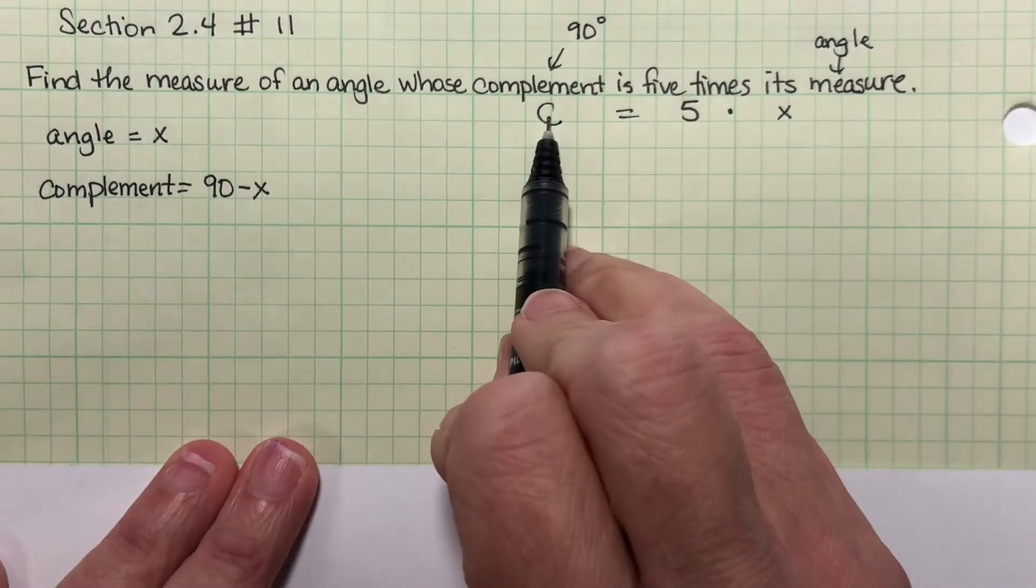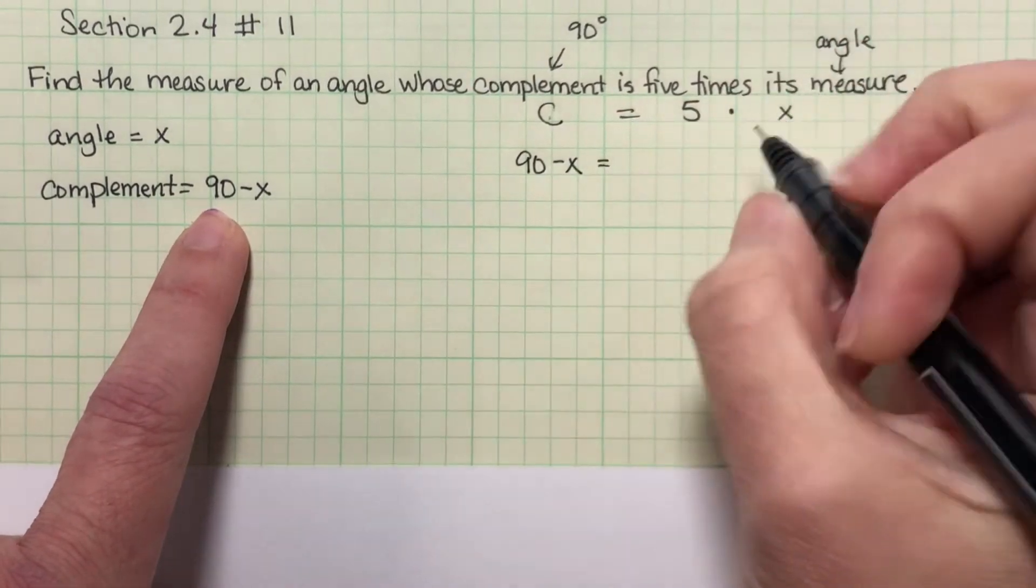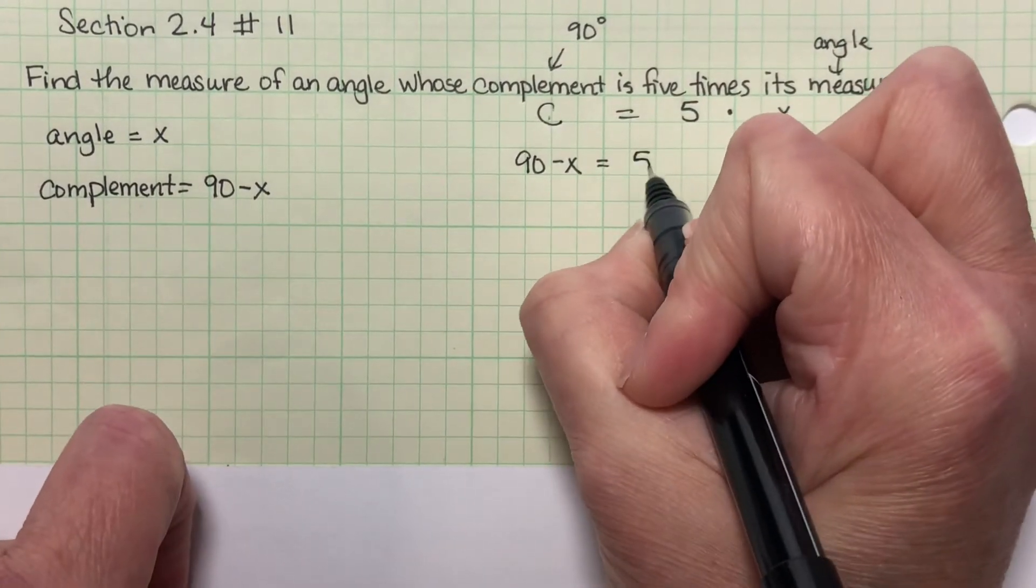Okay, the complement, well that's 90 minus X, equals 5 times X, which is 5X.